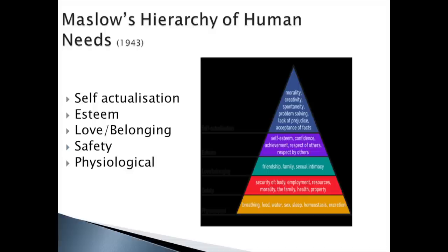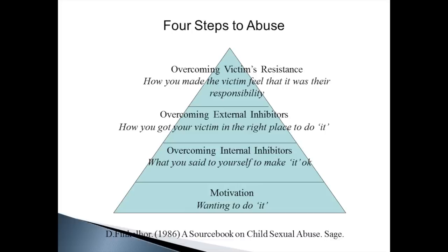It's worth reminding ourselves of Maslow's hierarchy of human needs — starting with basic physiological needs, moving on to safety, love, belonging, esteem, and self-actualisation. If we view adult safeguarding in this context, it makes understanding the new legal policy framework far more understandable. Finkelhorn's Four Steps to Abuse, from a source book on child sexual abuse, looked at: motivation — wanting to do it; overcoming internal inhibitors; overcoming external inhibitors — getting your victim in the right place; and overcoming the victim's resistance — making the victim feel it was their responsibility. Try and think of these steps to abuse in exactly the same way for adults.